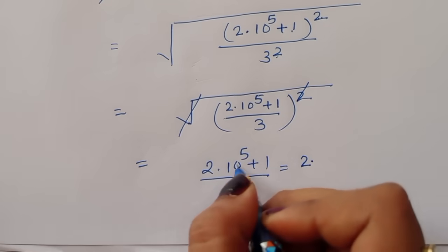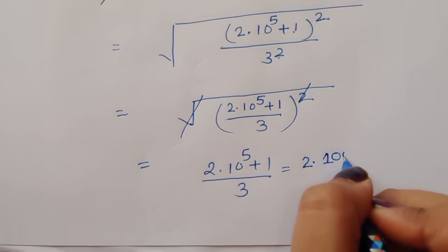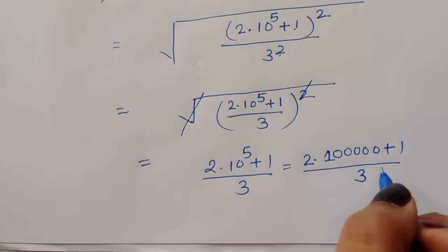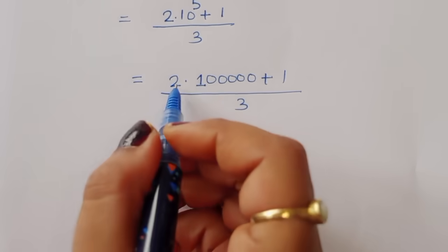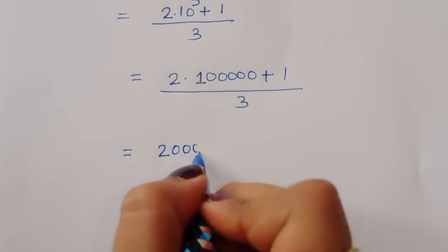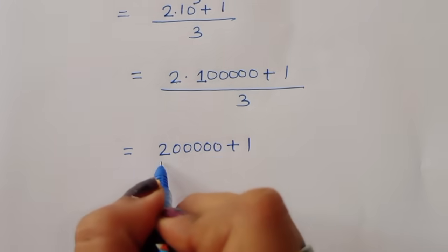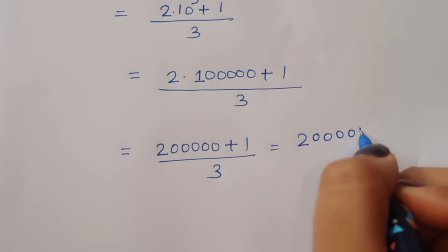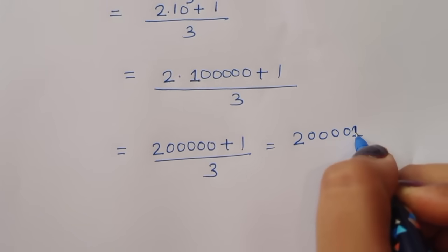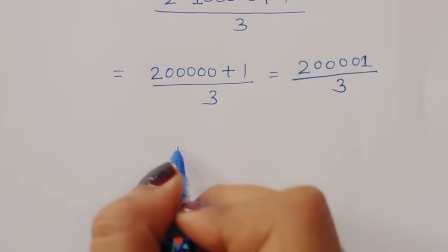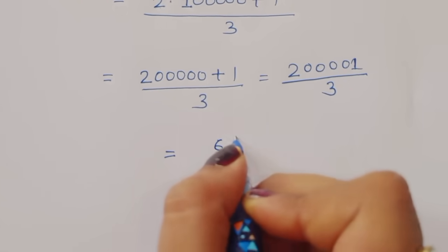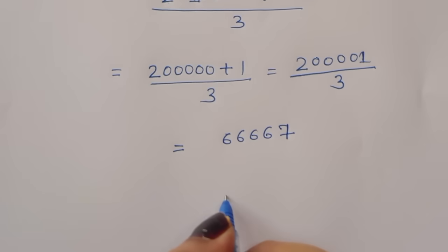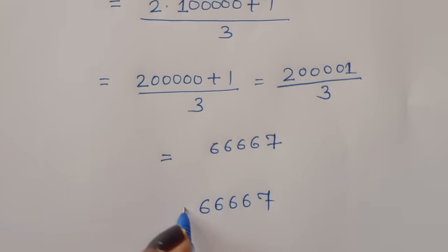So we get 2 times 100000 plus 1 divided by 3, which is 200001 divided by 3, equal to 66667. So the answer is 66667. This is the solution.